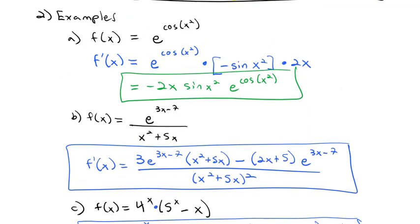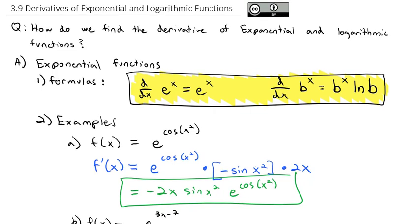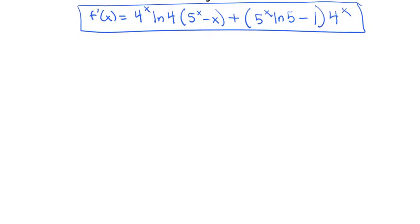Basically, all we're doing is expanding our repertoire of derivatives to include these two exponential formulas. The derivative of the exponential is the exponential times the natural log of the base. If it's e to the x, it's really nice because the derivative of e to the x is just e to the x. We can use the fact that the exponential derivative is so simple to derive the derivative of the logarithmic functions.